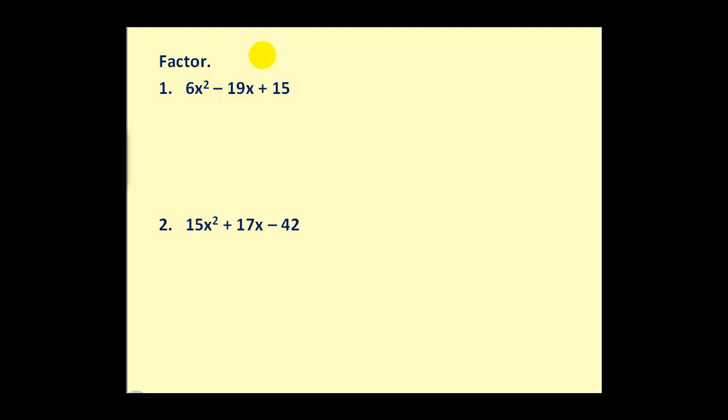If we want to factor this trinomial, we start off by setting up a set of parentheses. The first terms in each factor must consist of the factors of 6x². It could be 6x and x or 3x and 2x. I'm going to try 3x and 2x.